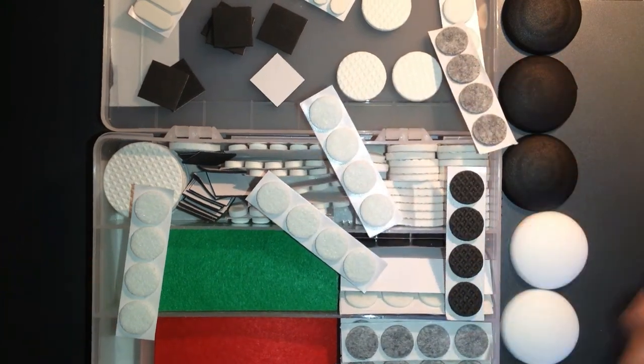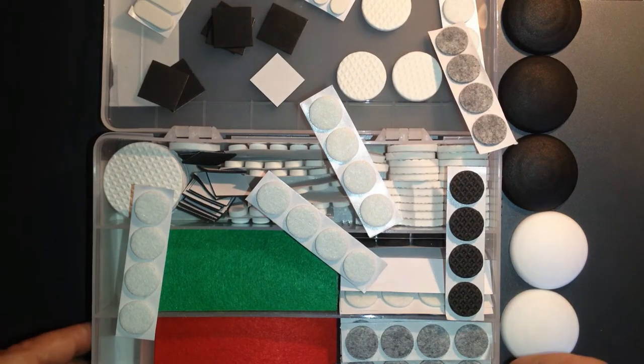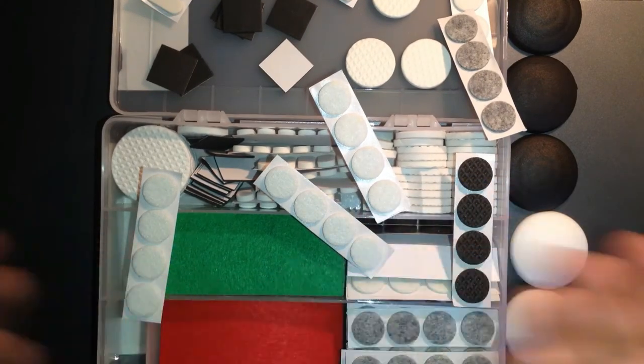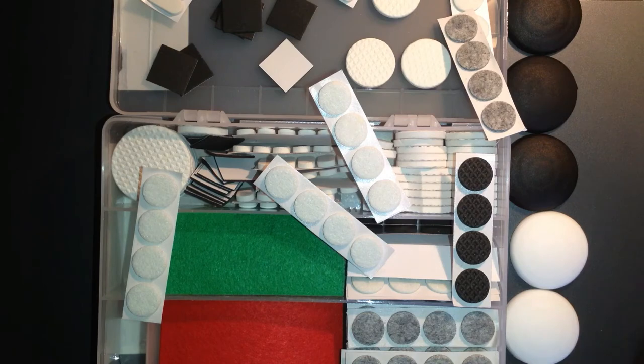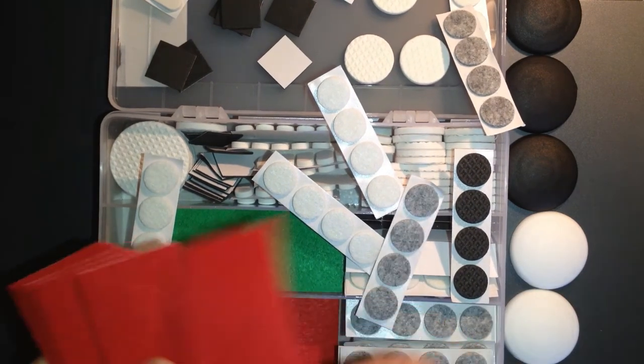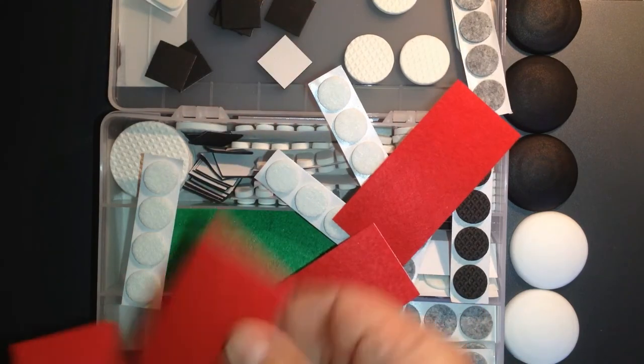Ragazzi, acquisto fondamentale per meno di 10 euro. Se avete mobili, qualsiasi oggetti da mettere, Feltrini, questo è il massimo che potete desiderare. Vai anche questi rossi, vai. Tac, tac, tac, tac, tac, tac.